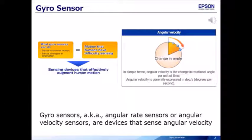Gyro Sensors, also known as Angular Rate Sensors or Angular Velocity Sensors, are devices that sense angular velocity or change in angle per unit of time.